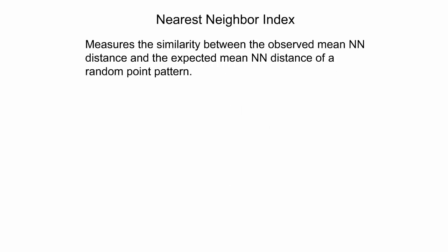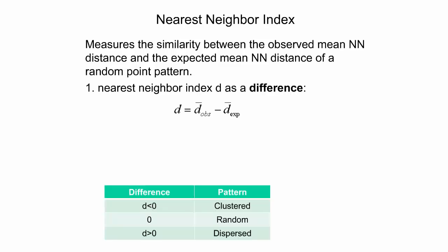Expected and observed mean nearest-neighbor distances can be used to compute the nearest-neighbor index. This index measures how similar the observed mean nearest-neighbor distance is to the expected mean nearest-neighbor distance of a random point pattern. The nearest-neighbor index can be computed as a difference by subtracting the expected from the observed mean nearest-neighbor distance, and the relationship between the difference and the cluster type is summarized in the table.